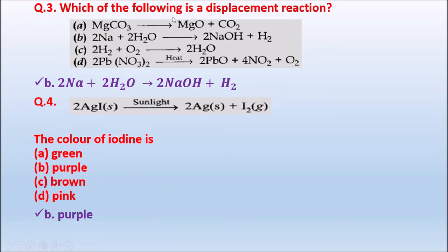Question 3: Which of the following is a displacement reaction? Option A: MgCO₃ → MgO + CO₂. Option B: 2Na + 2H₂O → 2NaOH + H₂. Option C: 2H₂ + O₂ → 2H₂O. Option D: 2Pb(NO₃)₂ → 2PbO + 4NO₂ + O₂. The correct answer is Option B: 2Na + 2H₂O → 2NaOH + H₂, which is a displacement reaction.